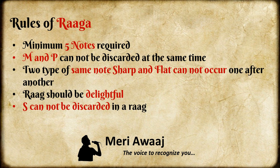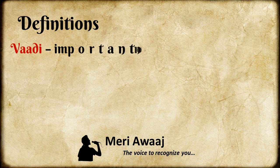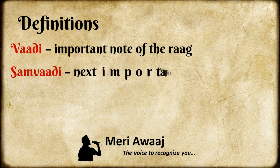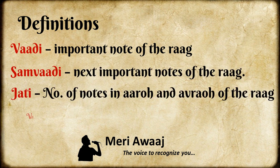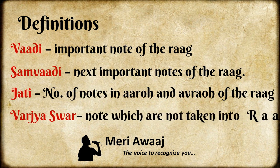Vadi and Samvadi in the raag exhibit their presence by emphasizing on a pause. All three octaves will have raag vistar. When we say raag, we should know the following terms: Vadi means the important note of the raag, and Samvadi is the next important note to Vadi. Jati shows the number of notes in aroha and avaroha of the raag. Each raag is sung at a specific time. Varjaswaras means the notes which are not taken in a particular raag.